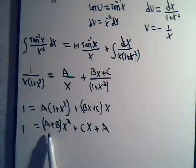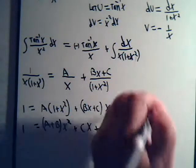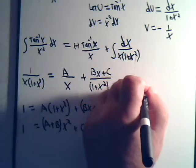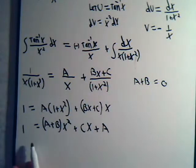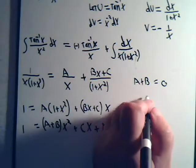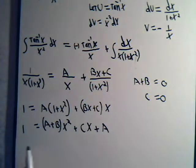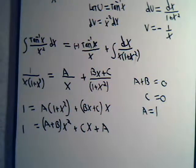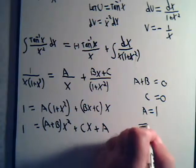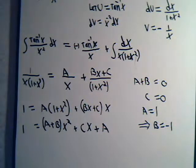And there are no x squareds on this side. So a plus b is going to have to be 0. c is going to have to be 0. And a is going to have to be 1. So we have a plus b. That's 0. There are no x's here. So c is 0. And a equals 1. So it looks like b will equal minus 1.